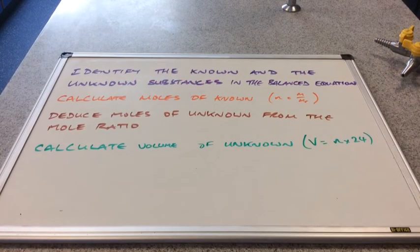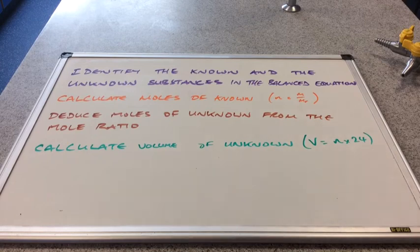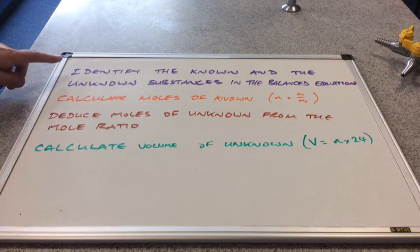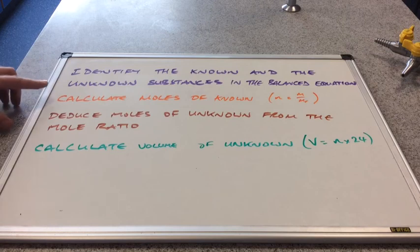We'll just finish with the steps. So just as we did in the reacting mass question, the first thing we do is we identify the known and the unknown substances in the balanced equation.